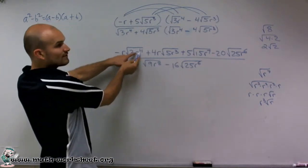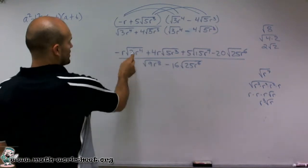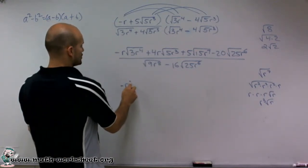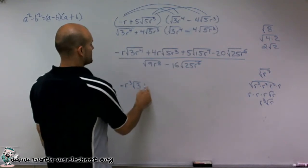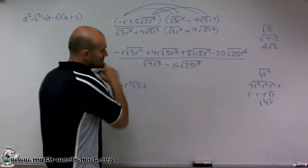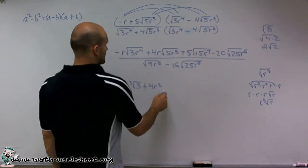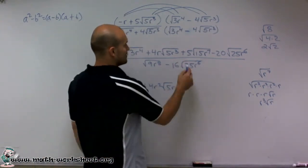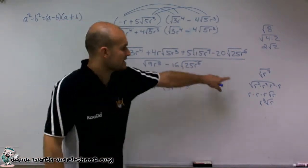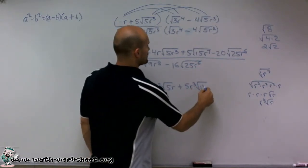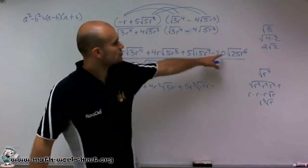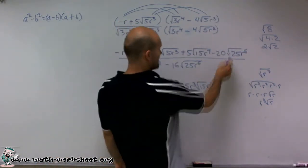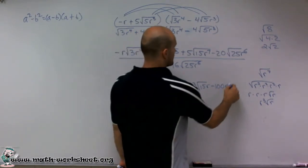So here, I take the square root of r to the fourth, which produces r squared, and then r squared times negative r gives me negative r cubed times the square root of 3. Plus the square root of r cubed gives me r, times r, being positive 4r squared, and I still have square root of 5r. Plus 5, r to the seventh can be broken down as r cubed times the square root of 15r. Minus the square root of 25, which simplifies to 5. r to the sixth simplifies as r cubed. So 5 times negative 20 gives me negative 100 r cubed.